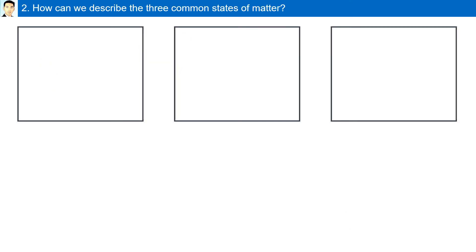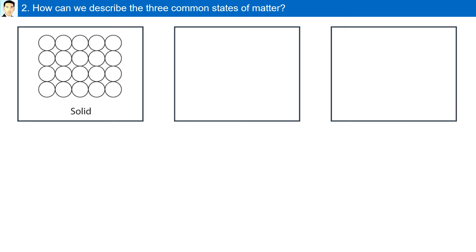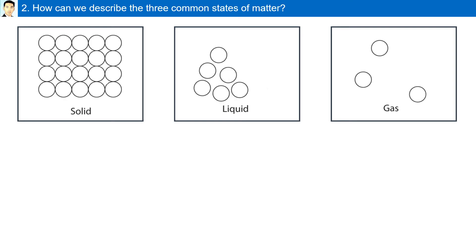How can we describe the three common states of matter? The three common states of matter are solids, liquids, and gases, and they can be abbreviated as S, L, and G.